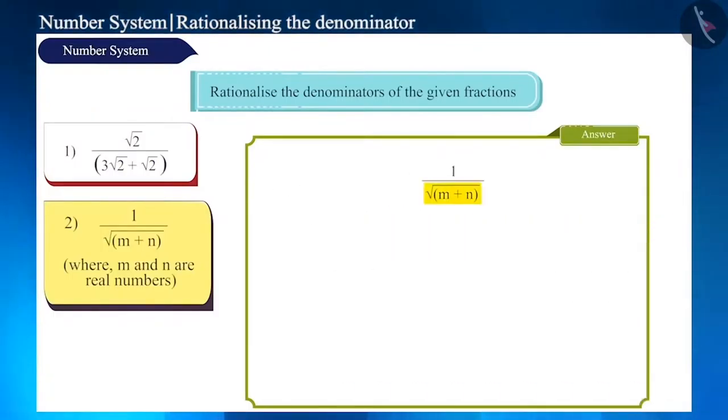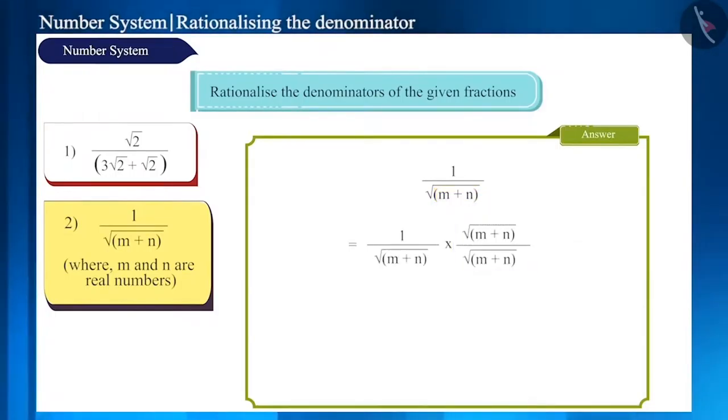should we multiply the denominator and the numerator with root of m minus n the whole? Both these numbers are in the same square root. Therefore, we will multiply the numerator and denominator with square root of m plus n and we will get root m plus n by m plus n.